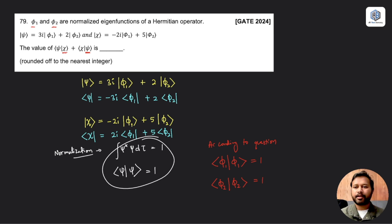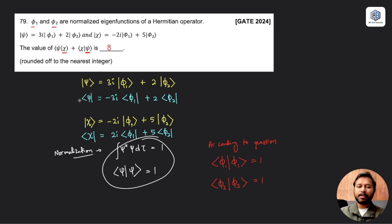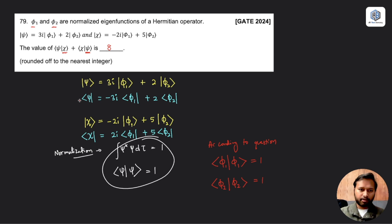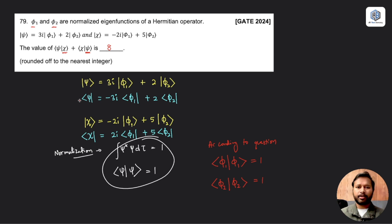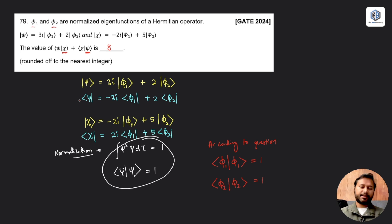The correct answer for this numerical answer type question is 8. It is a very simple and easy question — you just need to understand the concept of ket and bra vectors, which is Dirac notation. We have a detailed 30-minute video on YouTube that will make your concept of Dirac notation clear.